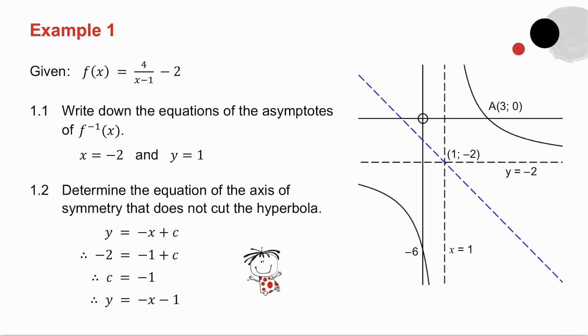Question 1.2 asks you to determine the equation of the axis of symmetry that does not cut the hyperbola. So I've drawn it in there. Remember the gradient of that line is minus 1. It passes through the point 1 minus 2. So I substitute 1 minus 2 and I get the equation of my axis of symmetry.